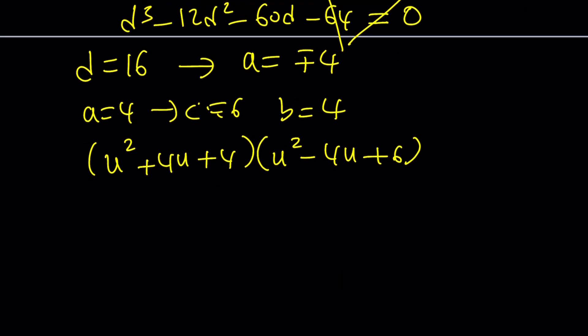You can definitely check this out because definitely 4 times 6 is 24. If you look at the coefficient of u cubed, it's going to be 0. If you look at the coefficient of u squared, you're going to get 6 plus 4, which is 10, minus 16. 10 minus 16 is negative 6u squared, so everything will be satisfied and you'll get the u values from here.